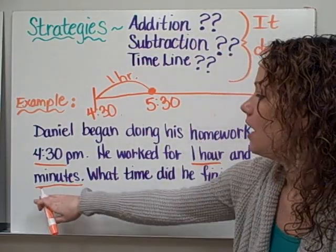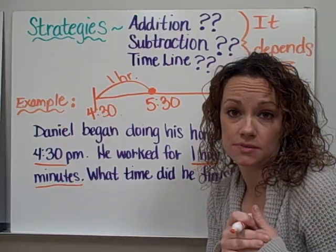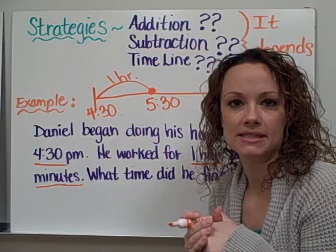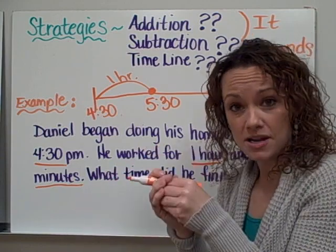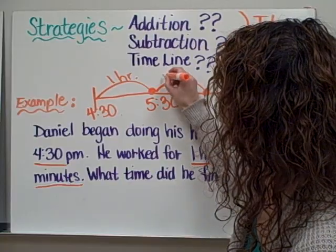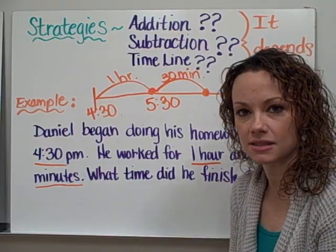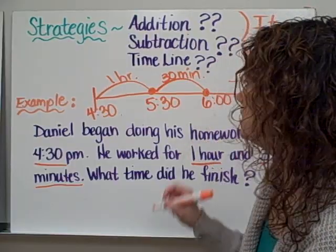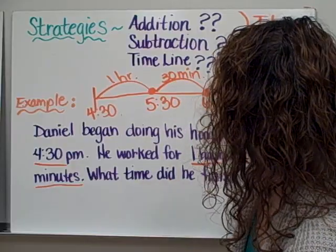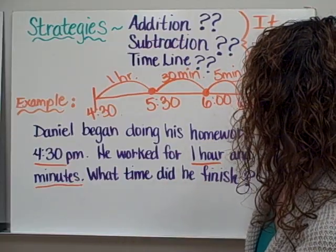The next thing we need to do is look at the rest of the time that has passed — now we're dealing with 35 minutes. Once you've dealt with all the hours, I like to look at the next chunk of time that's a little bit larger than just single minutes. So the next chunk would be increments of 30 minutes. We can pull out 30 minutes from that time: 5:30 plus 30 minutes gives you 6 o'clock. But we're not quite done yet because the time passed was 1 hour and 35 minutes, so we need to include that final 5 minutes. If we're at 6 o'clock and we jump 5 minutes later, the time would be 6:05.